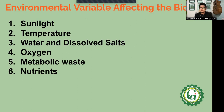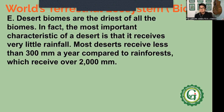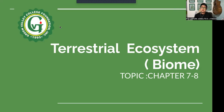For the environmental variables affecting biomes: sunlight is the major energy source for all animals and plants. Temperature matters — if it's too cold, the environment and plants won't thrive. Water and dissolved salts affect salinity — if an area is too salty, it will hinder the growth of some organisms. Oxygen levels, metabolic waste, and nutrients also play a role. That covers your terrestrial ecosystem, which is the content of Chapter 7 and Chapter 8. I will send the video for Chapter 9 shortly. Thank you, class.